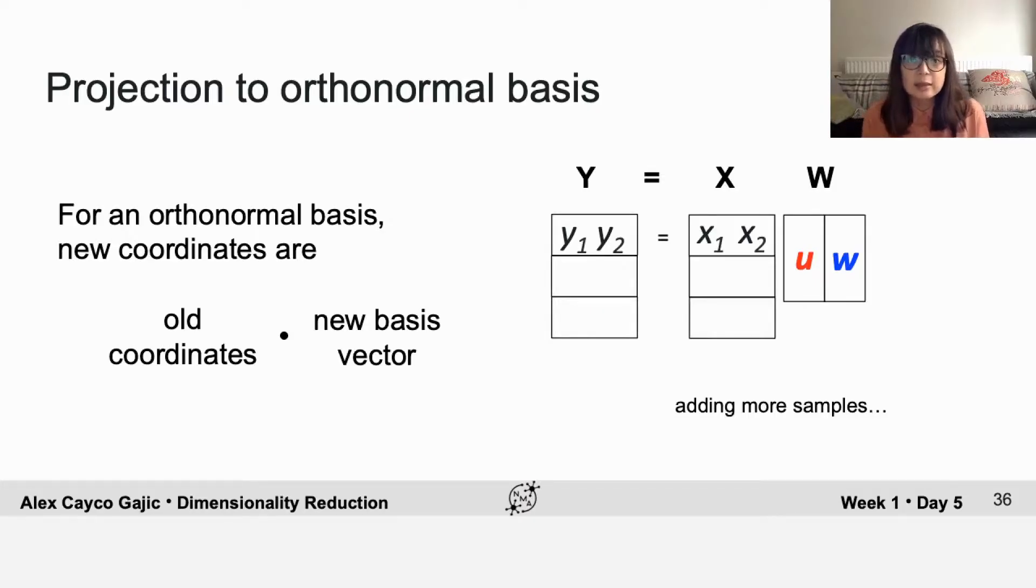So now you can see that projection to an orthonormal basis is really just matrix multiplication, where you have Y, which is your new data matrix in the new orthonormal basis, is equal to X, your old data matrix, times W, which is a matrix formed by concatenating the column vectors corresponding to your new basis vectors.